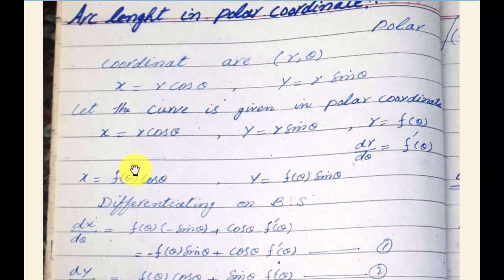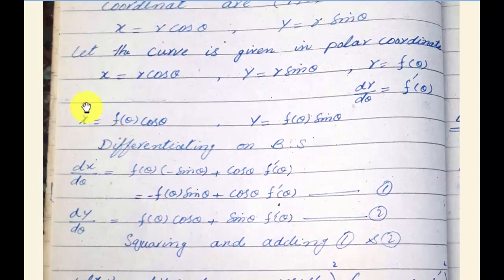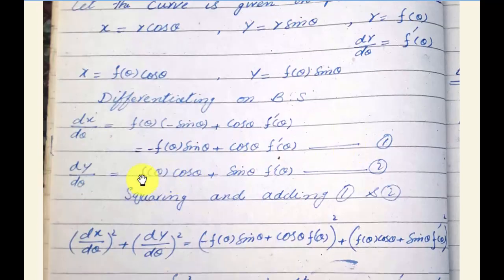We differentiate with respect to θ. dx/dθ = f(θ)(-sin θ) + cos θ · f'(θ). This uses the product rule. Similarly, dy/dθ = f(θ)cos θ + sin θ · f'(θ).